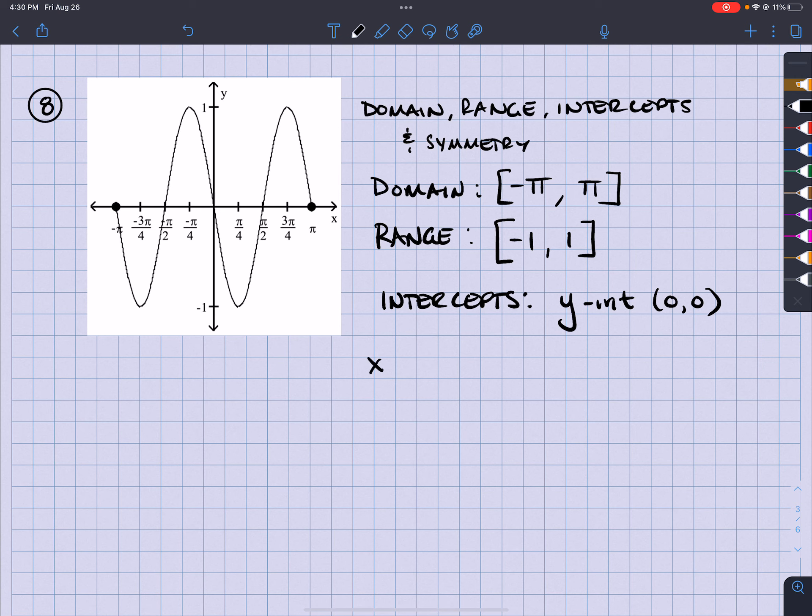I have x-intercepts, and that's going to be at negative π, 0. It's going to be at negative π halves, 0. It's going to be at 0, 0. It's going to be at π halves, 0. And it's going to be at π, 0. Okay, so those are all my intercepts.